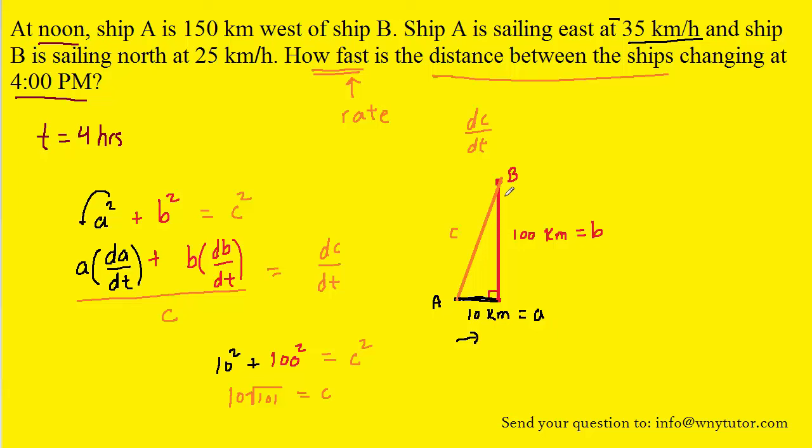Now, the distance that B is traveling along is actually growing. It's increasing as ship B travels upward to the north. So that rate will be a positive rate. The question stated that ship B is sailing at 25 kilometers per hour. So when we plug in for dB/dt, we can use a positive 25 kilometers per hour. So let's plug all the known values in now.